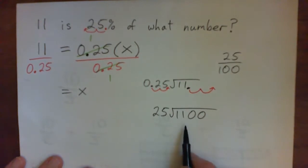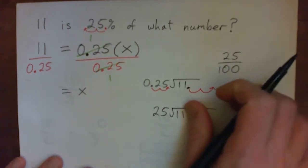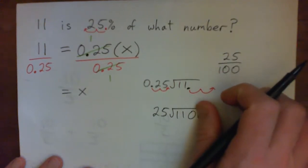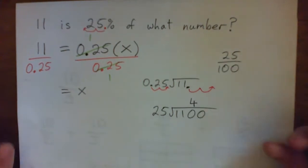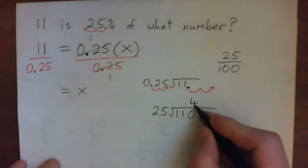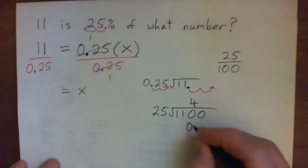And that gives us 25 into 1100. Now we do the long division: 25 into 11 won't go; 25 into 110—well, 25, there's 4 25s in 100, so 25 into 110, let's try 4.